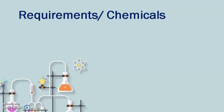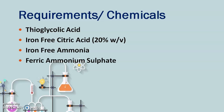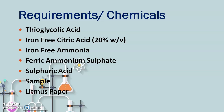The chemicals required are: thioglycolic acid, iron-free citric acid — specifically iron-free because the presence of iron in any of these chemicals may alter the result of the limit test — iron-free ammonia solution, ferric ammonium sulfate, which will be used to prepare the standard solution, sulfuric acid, the sample, and litmus paper to check the pH.